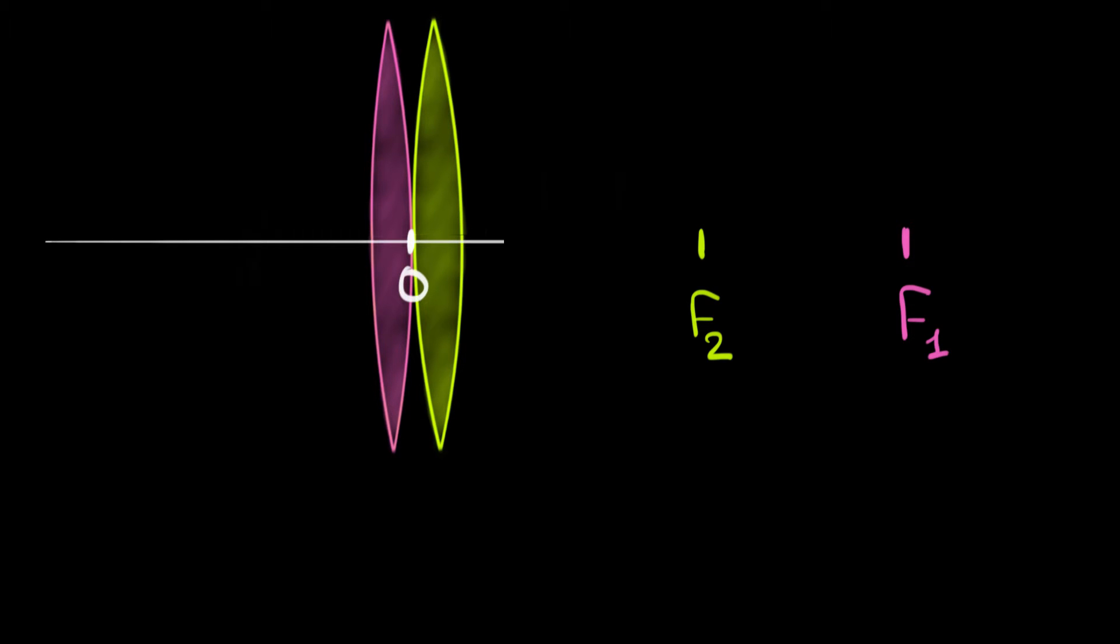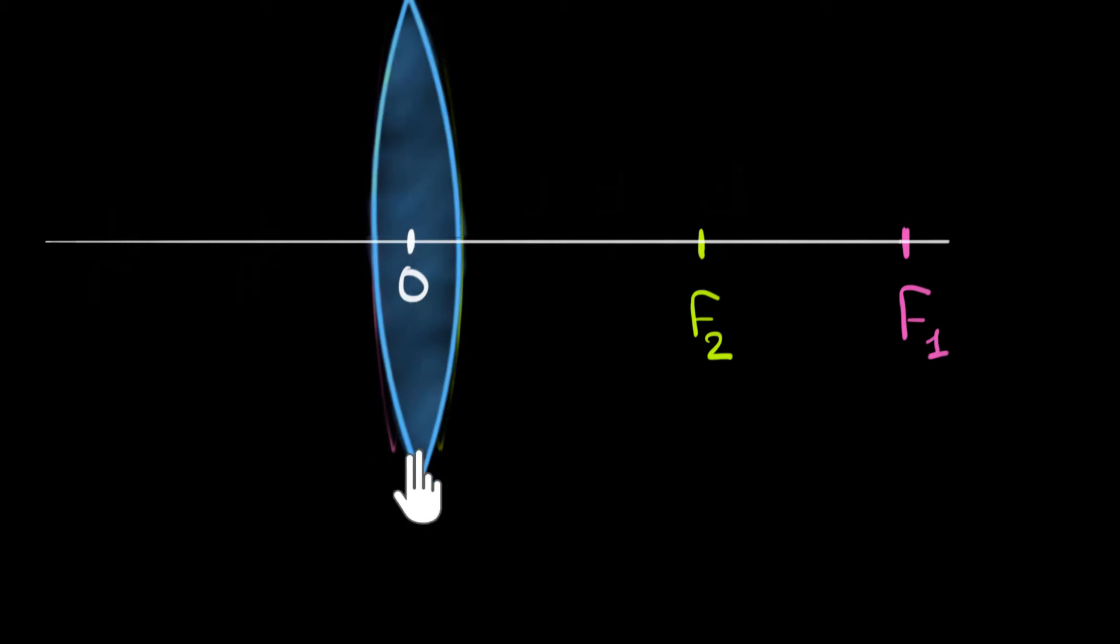Let's draw our principal axis. Since we're dealing with very thin lenses, we can totally neglect their thickness and assume that their optic centers are at the same point. To figure out the focal length of this effective lens, we'll do what we always do: shoot parallel rays of light and see where they get focused.